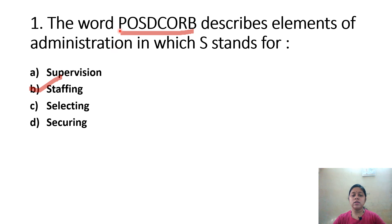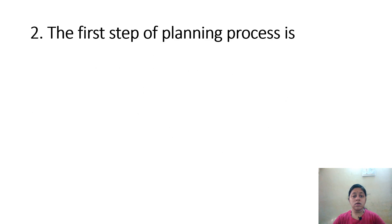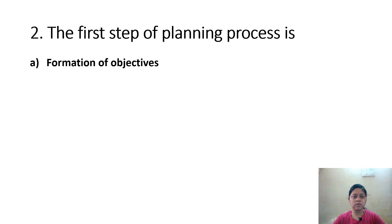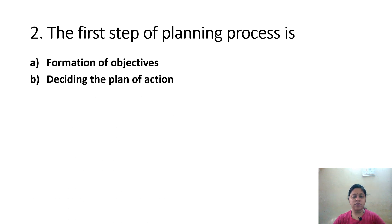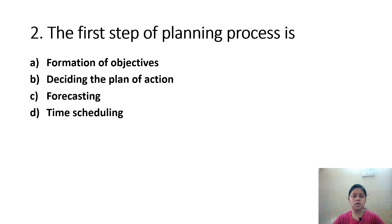Planning involves objectives, policies, and strategies formulation. The first step of the planning process is: Option A, Formation of objectives; Option B, Deciding the plan of action; Option C, Forecasting; Option D, Time Scheduling. The correct answer is Option C, Forecasting.